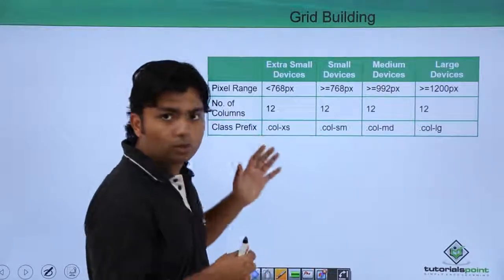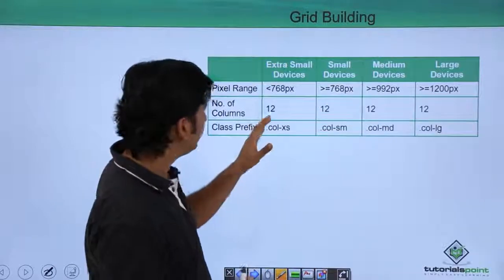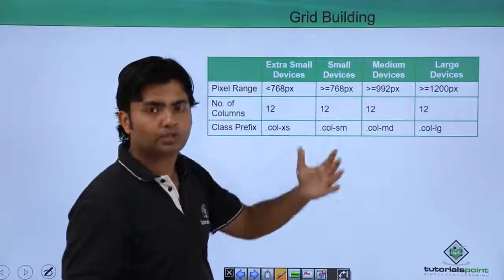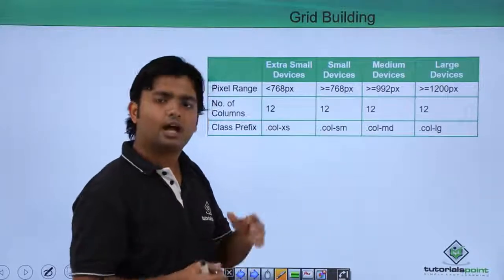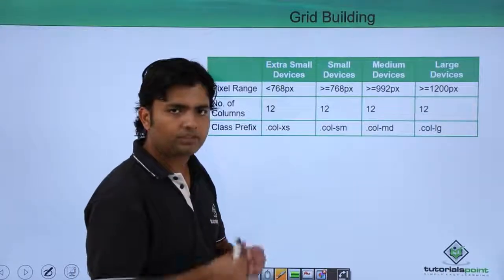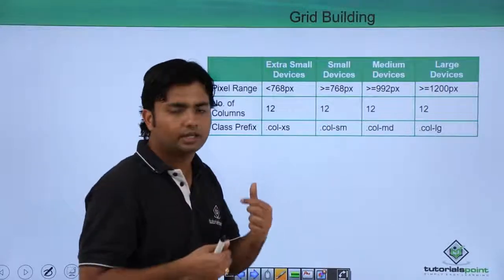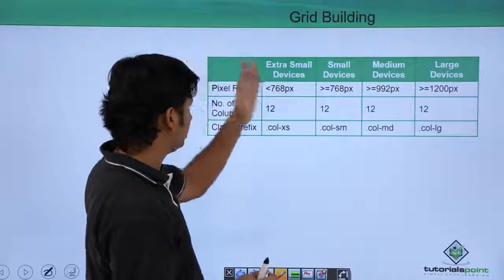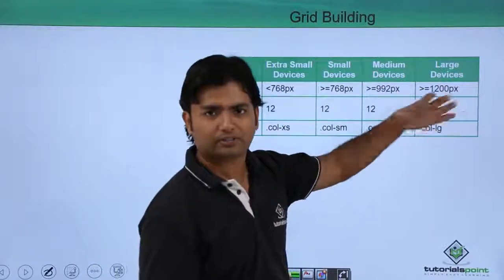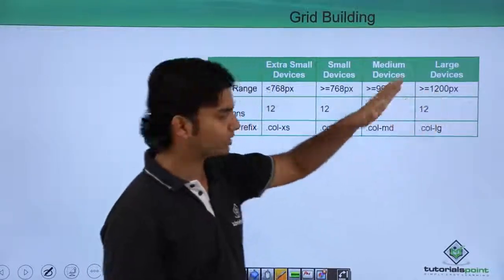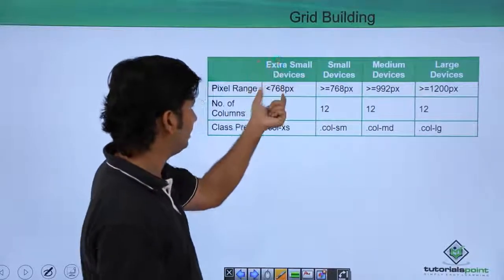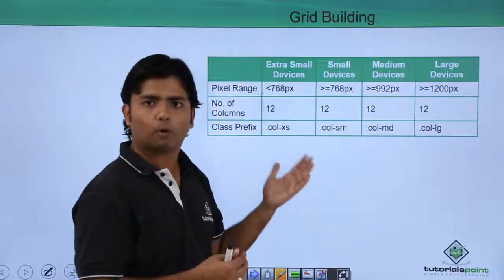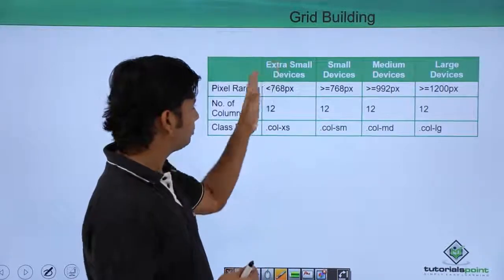It all depends on the number of pixels, which I'll show in the practical implementation. Since I'm working on a 14-inch laptop, I cannot show large devices as the pixel number will be much higher. If the number of pixels is less than 768, it is considered a mobile device — extra small devices.